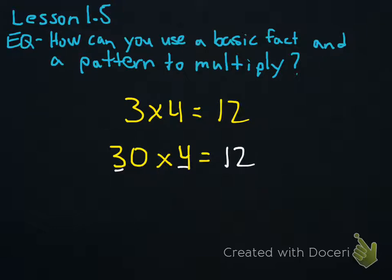And since there's a 0 attached to that 3, all we would have to do is add that 0 to our product, which would give us an answer of 120.